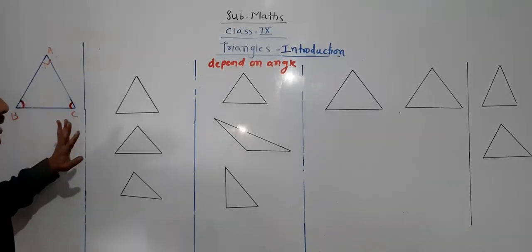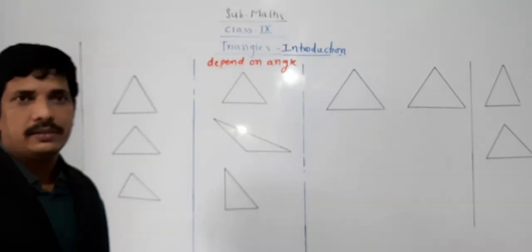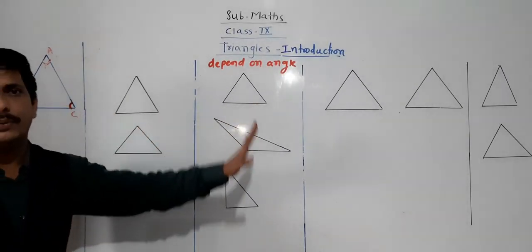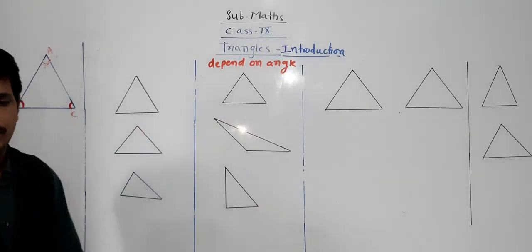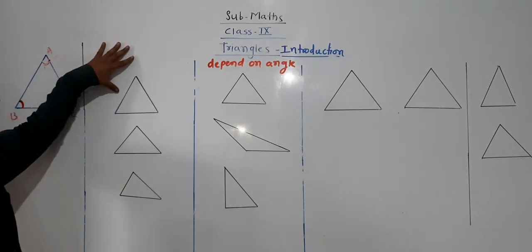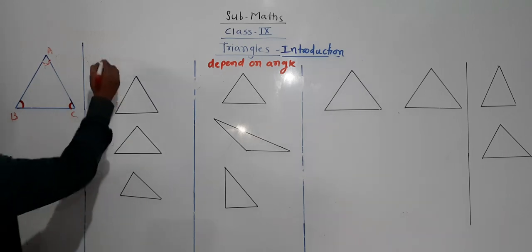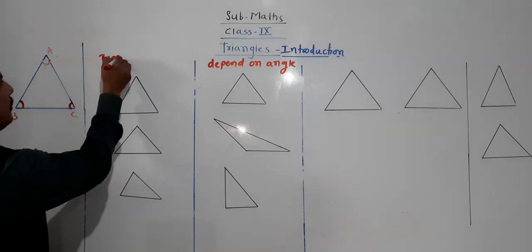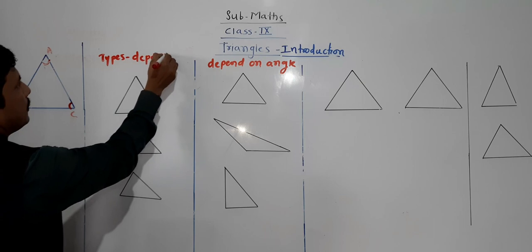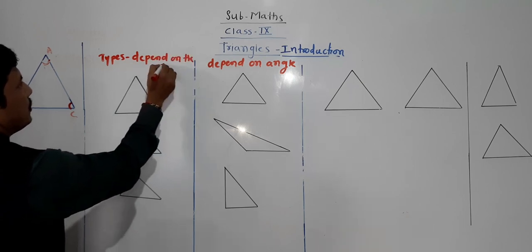There are 6 types of triangles. Three types are based on the sides and three are based on the angles. Now we are going to see the types which depend on the sides — that is, the length of the sides.